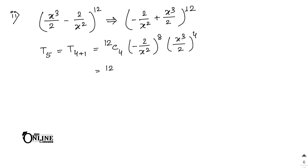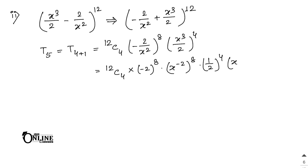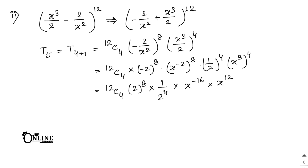Expanding: 12C4 × (−2)^8 × x^(−16) × (1/2)^4 × x^12. For the powers of 2: 2^8 / 2^4 = 2^4. For x: x^(−16) × x^12 = x^(−4). So the power of x is −4.